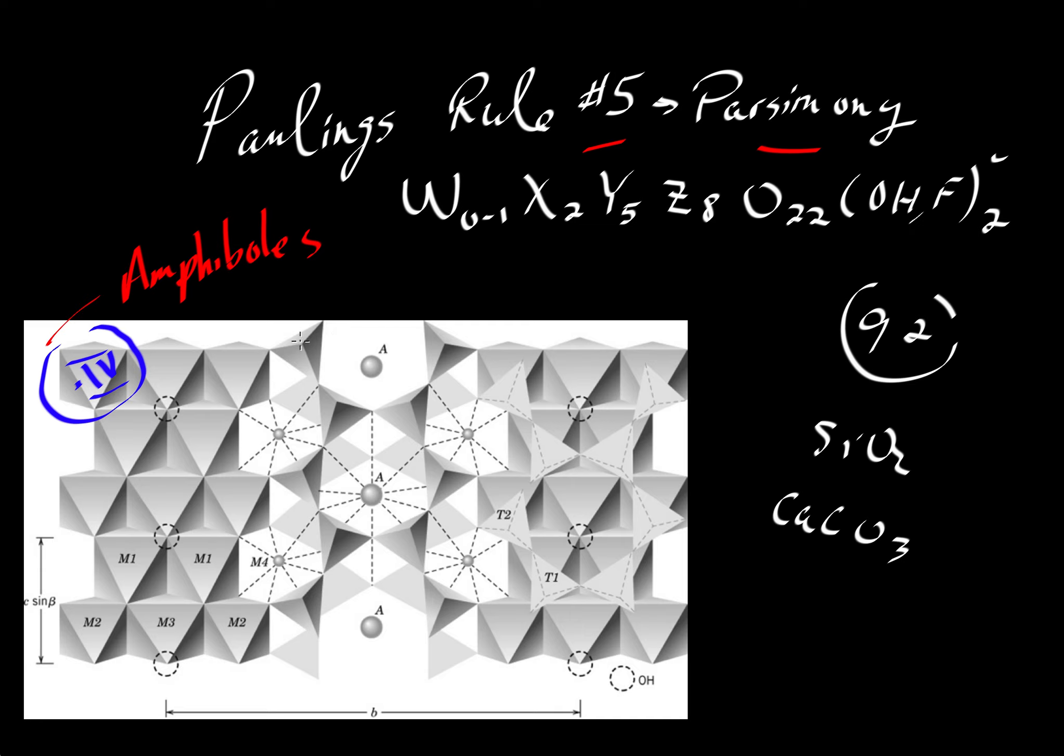Then we have these tetrahedral sites. We'll call them a T. The tetrahedral sites come in two different flavors. So we call them a T2 and a T1. And then these octahedral sites, we could use O, but since we fill them with metal cations, we'll use M. And we have four different sizes. There is the largest M4 and then a little bit smaller M1. And then we have the M3 and the smallest is M2.